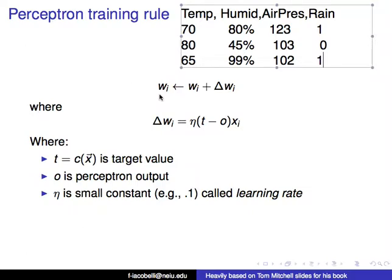The way this works is you set all the weights — all the w_i's — to some random value. Then you go through all of the examples, and for each example you process in the neuron, you multiply each input by its weight and see whether it produces a 1 or a negative 1. If it produces a 1 for an example that should be 1, then that example was correctly classified, and that weight is probably okay.